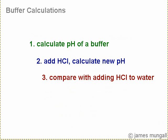This question which I'm going to go through is in three parts. The first is calculating the pH of a buffer, then adding some HCl and calculating the new pH, and then comparing that to the pH of water with a similar amount of HCl.